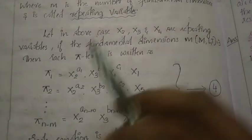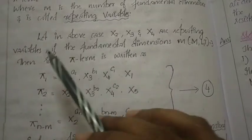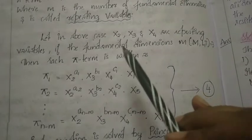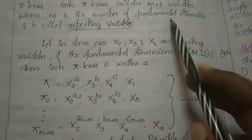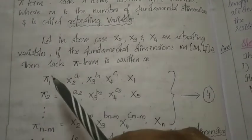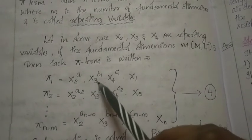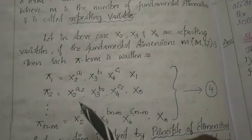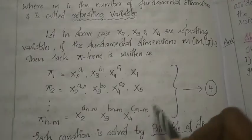Let x2, x3, x4 be the repeating variables, where m (the number of fundamental dimensions M, L, T) = 3. Each Pi term contains m+1 = 4 variables. Each Pi term is written as: π1 = x2^a1 · x3^b1 · x4^c1 · x1, and similarly π2, etc., up to πn-m. This is equation number 4.